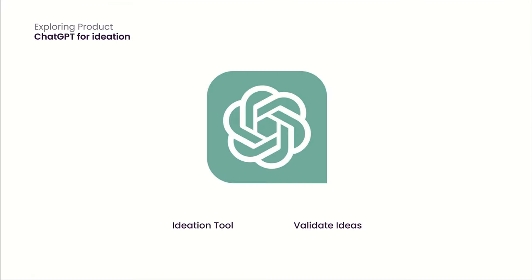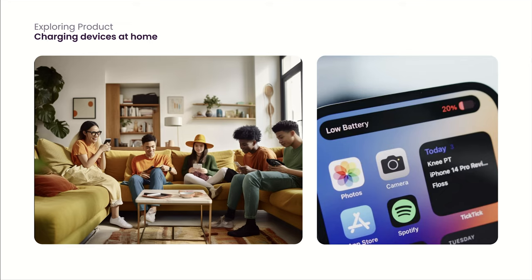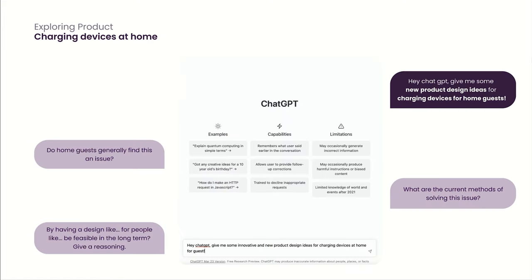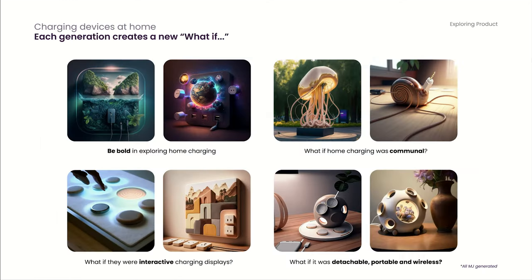Let's start with using ChatGPT as an ideation and validation tool. Here's an example: Geraldine, do you often find it troublesome to ask for a phone charger at a friend's house? Especially when the other guests also need to charge their phones and it becomes inconvenient to share because there are so many people. To come up with a solution, we questioned and asked ChatGPT to validate our design ideas before visualizing in Midjourney. We generated several conceptual ideas concurrently, asking what-if questions — like making it communal, portable, or visually interactive.